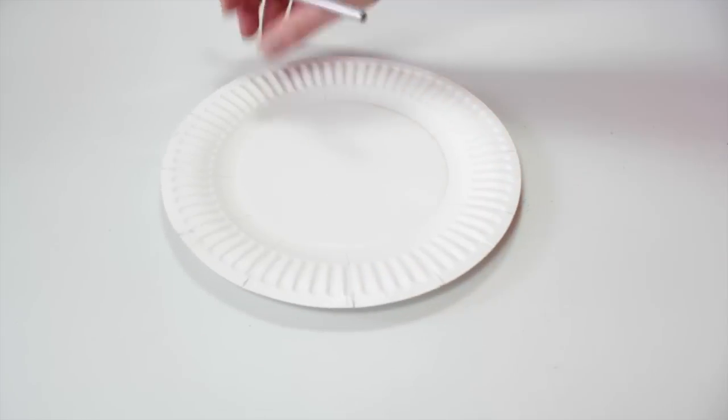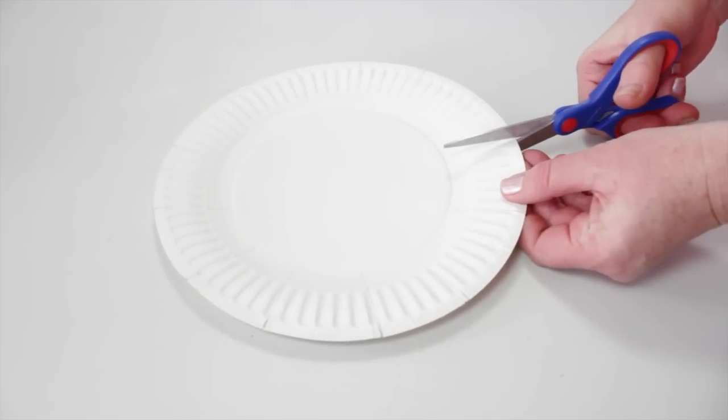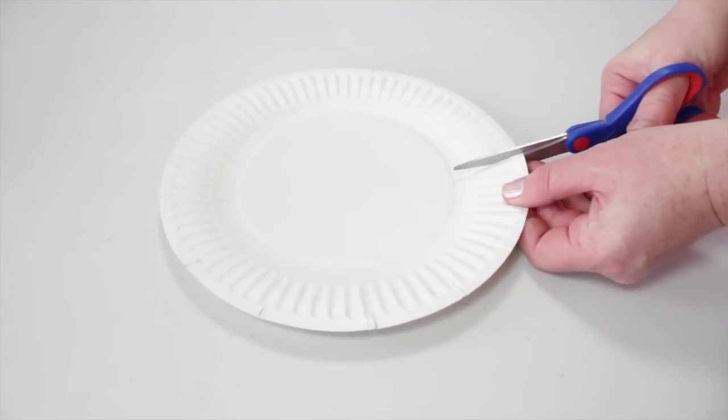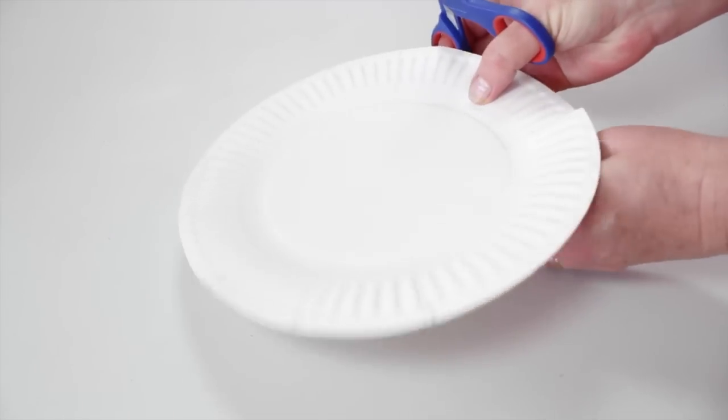Just remember the tabs need to be an odd number. Now cut 0.5 of a centimeter either side of the line to make a long V-shape.